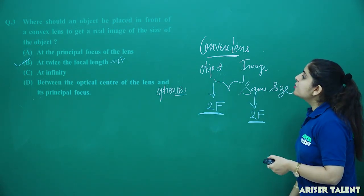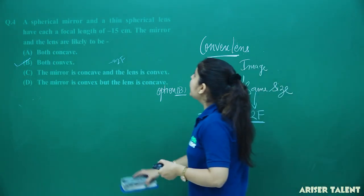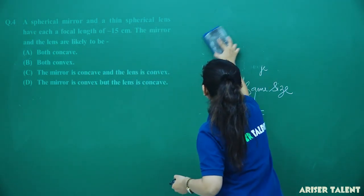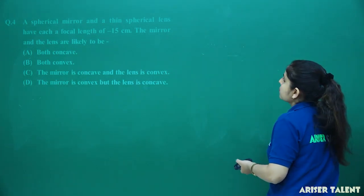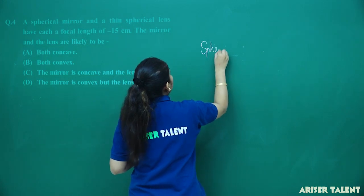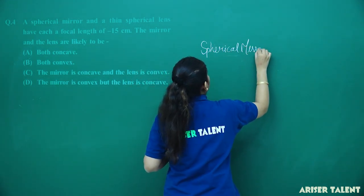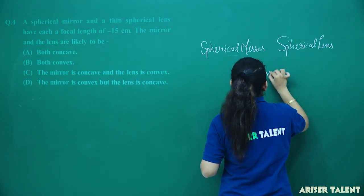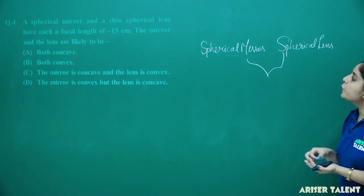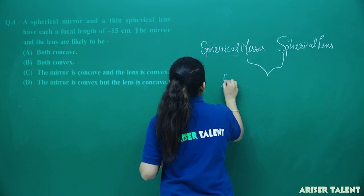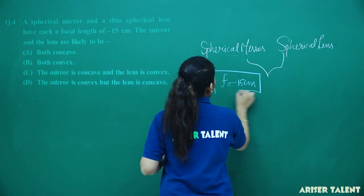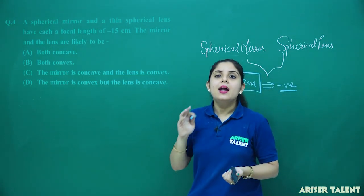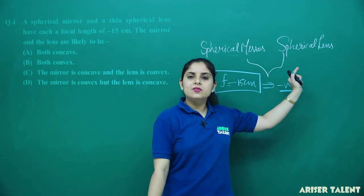A spherical mirror and a thin spherical lens both have a focal length of minus 15 centimeters. You are provided with one spherical mirror and one spherical lens, and both are given a focal length of minus 15 centimeters. Since the focal length is negative in both cases, the mirror will be a concave mirror and the lens will be a concave lens. So both of these will be concave.